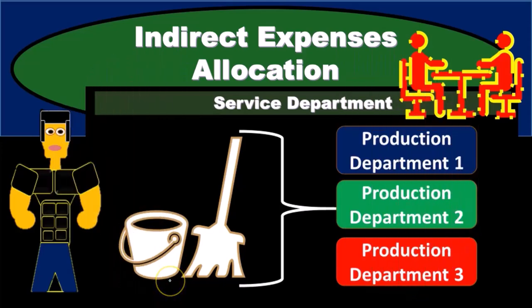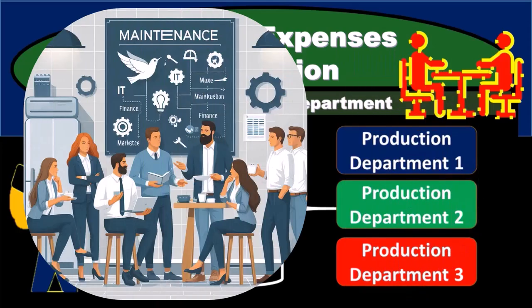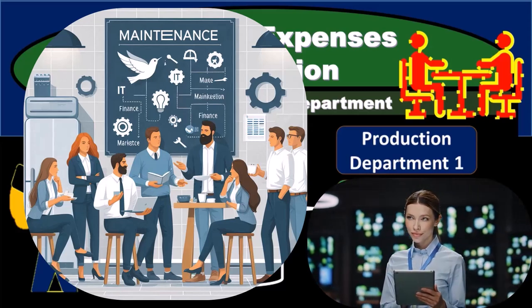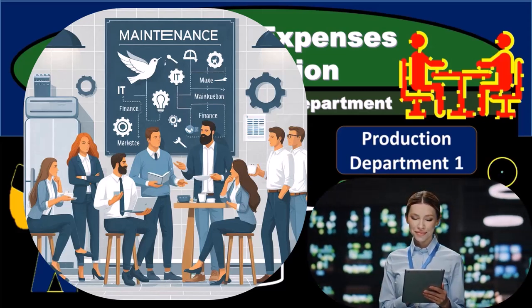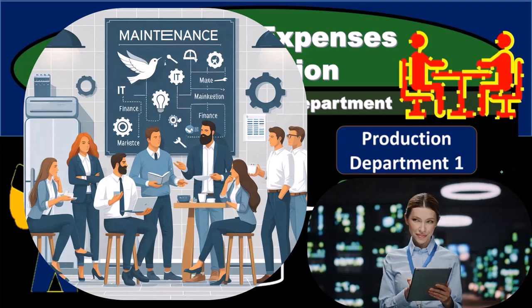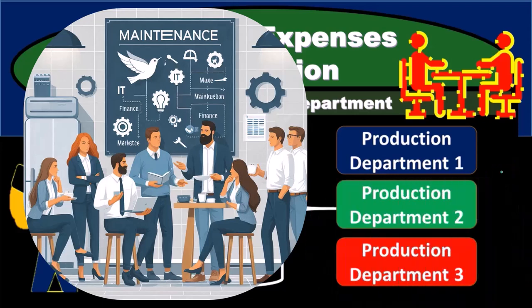For example, if we have the maintenance service on the building, we would need to allocate that to the departments that the maintenance service is covering. We might say, well, if there are three departments, we should just take the cost of maintenance divided by three. That would be one allocation method — a very simplified allocation method that may be applicable in some cases.